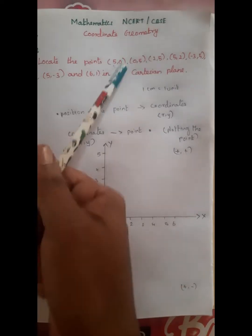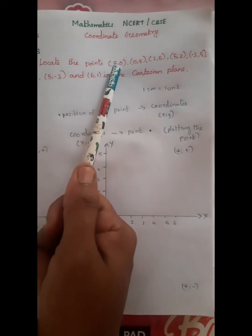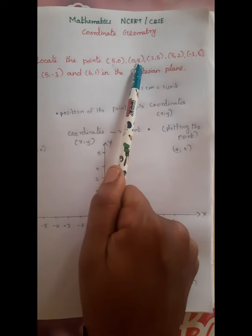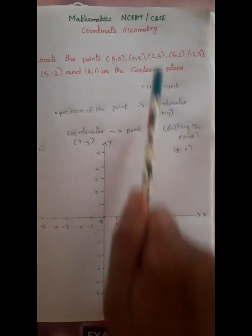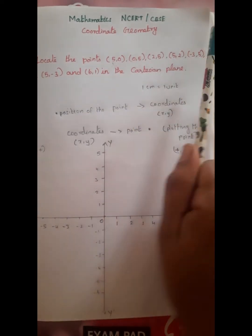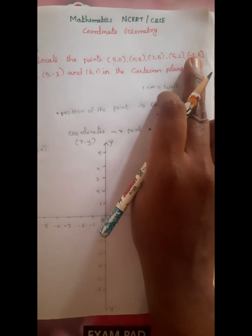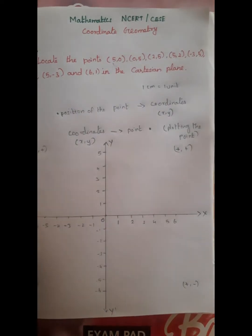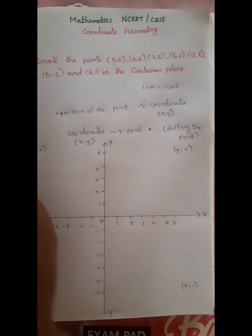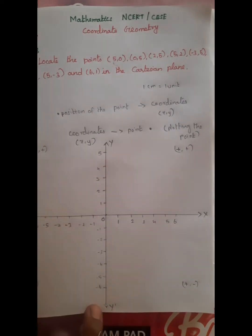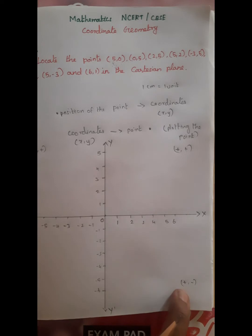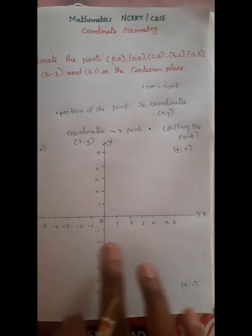To write these numbers and correctly locate each point, you need to identify the sign. If both are positive, the point is in the first quadrant. The point (0,5) will be in the first quadrant. If x is negative and y is positive, it falls in the second quadrant — check the sign carefully.